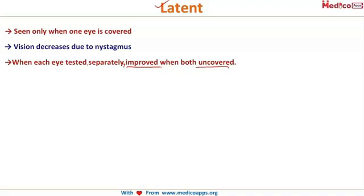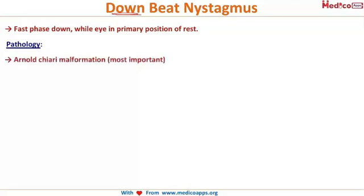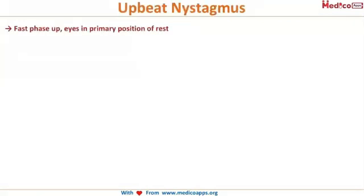Downbeat nystagmus: the fast component is in the downward direction while the eye is in the primary position of rest. It is seen in Arnold-Chiari malformation and platybasia. Upbeat nystagmus: the fast phase is upwards when the eyes are in the primary position of rest.